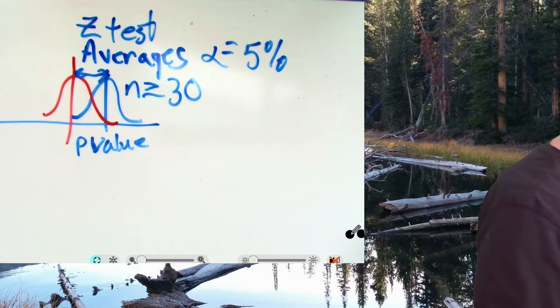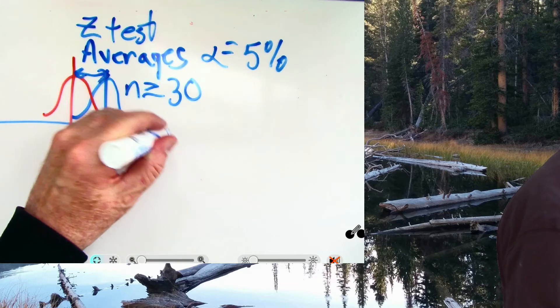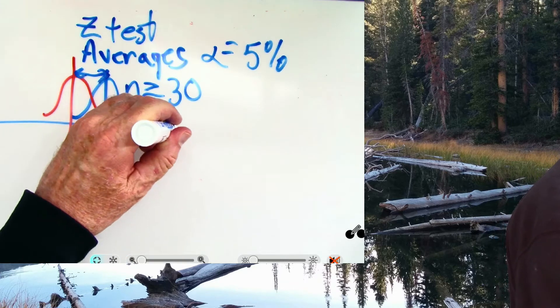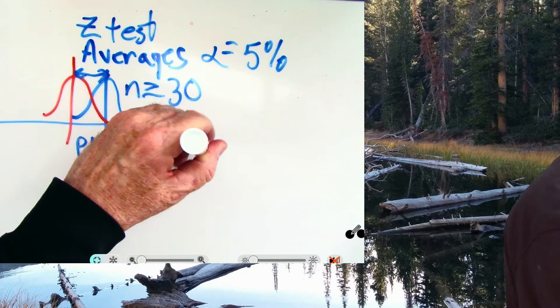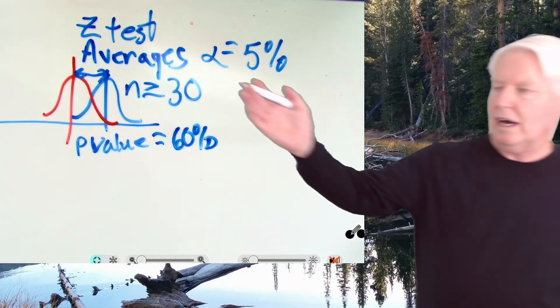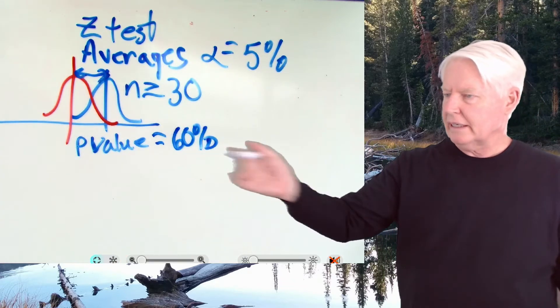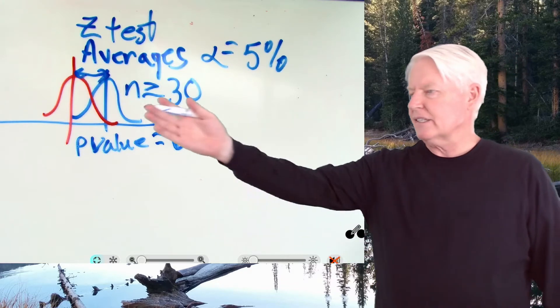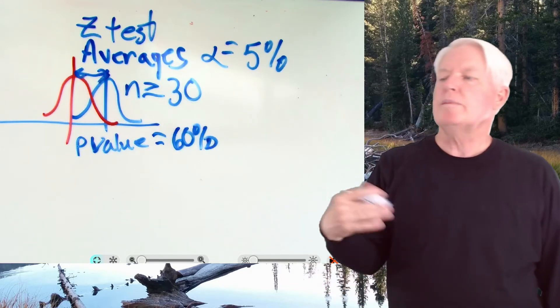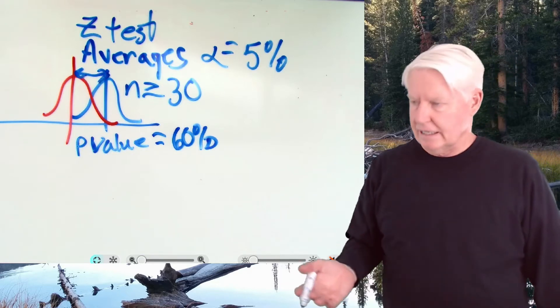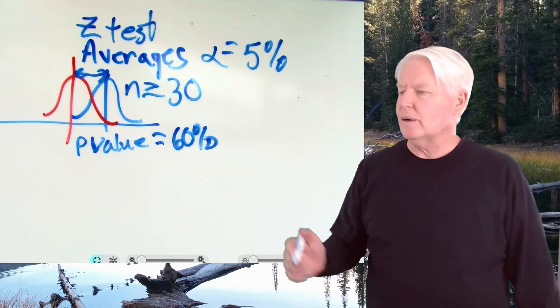So, for example, we could go the P value, let's say, equals 60%. And the alpha risk equals 5%. This is the risk we're willing to take. This is the actual risk. I'm not willing to take 60% risk. So we say that this difference in the averages would be statistically insignificant. There you go, statistically insignificant.